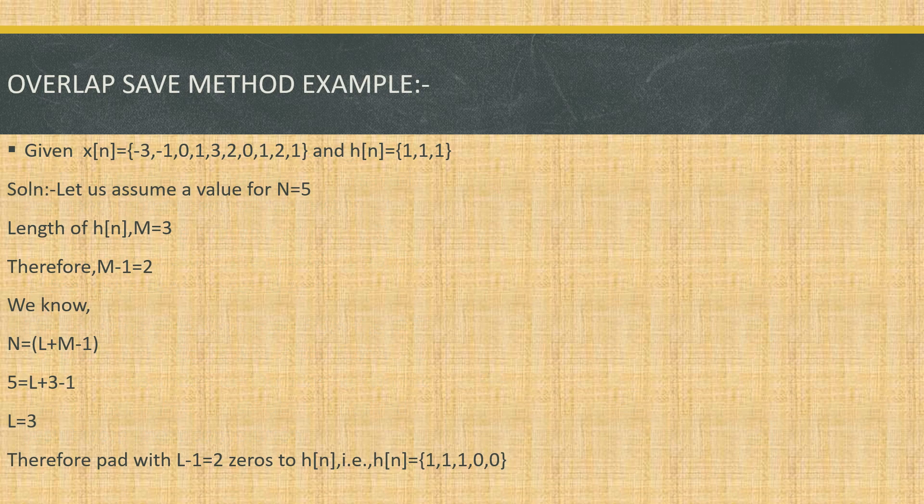Now let us understand the overlap save method using an example. A signal is given as x(n) = {-3, -1, 0, 1, 3, 2, 0, 1, 2, 1} and h(n) = {1, 1, 1}. The first step is determining the length of the impulse response h(n), which gives M = 3.